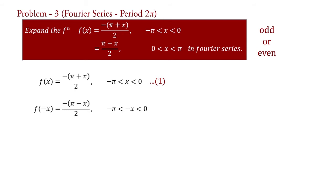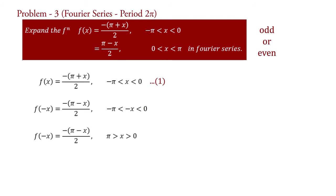Now, change the sign of quantities of the interval and that of the inequality. Therefore, f(minus x) equal to minus(pi minus x)/2 for pi greater than x greater than 0. Writing the interval in inverse order, f(minus x) equal to minus(pi minus x)/2 for 0 less than x less than pi — say equation 2.